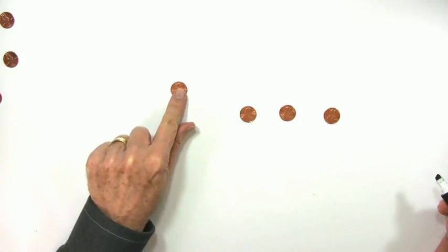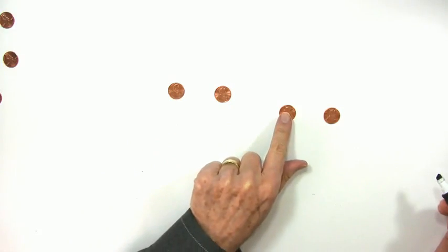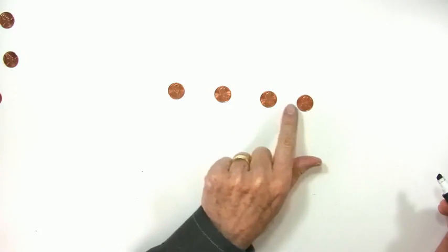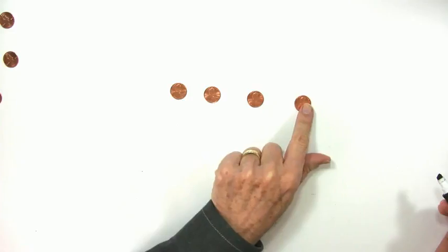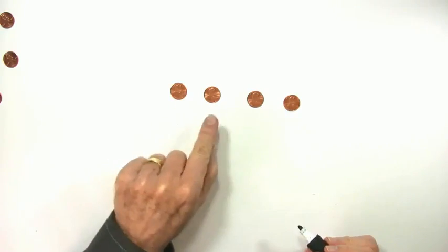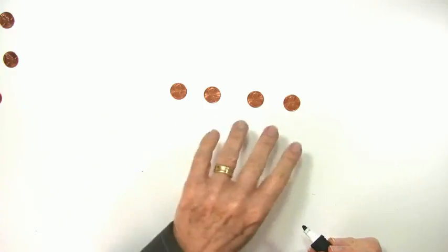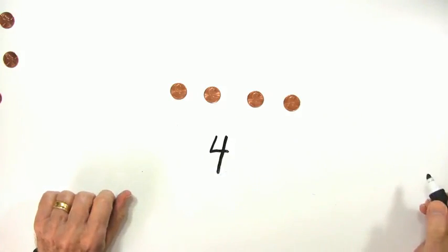This is penny number one, penny number two, that's penny number three, that's penny number four. Do you remember that? One, two, three, four pennies. So how many is the total? One, two, three, four. How many all added up? That is four pennies.